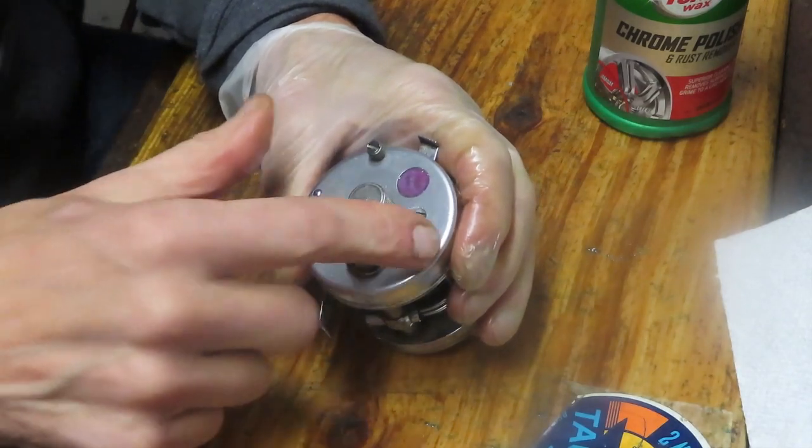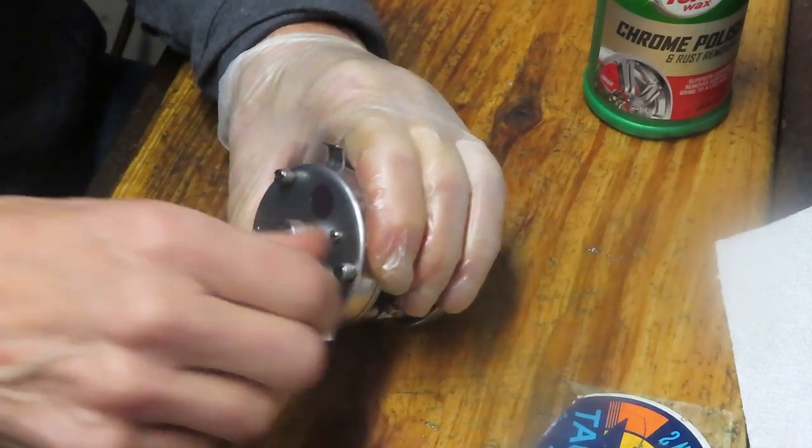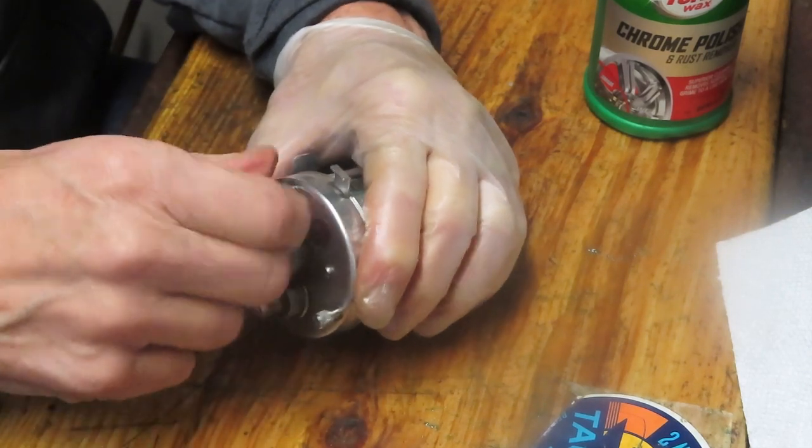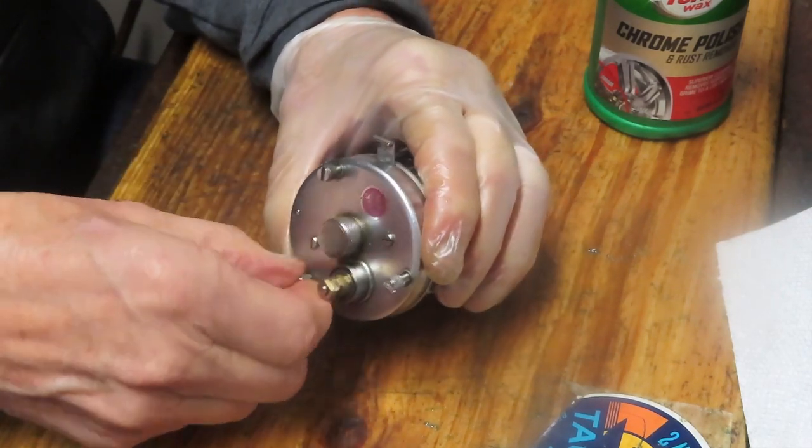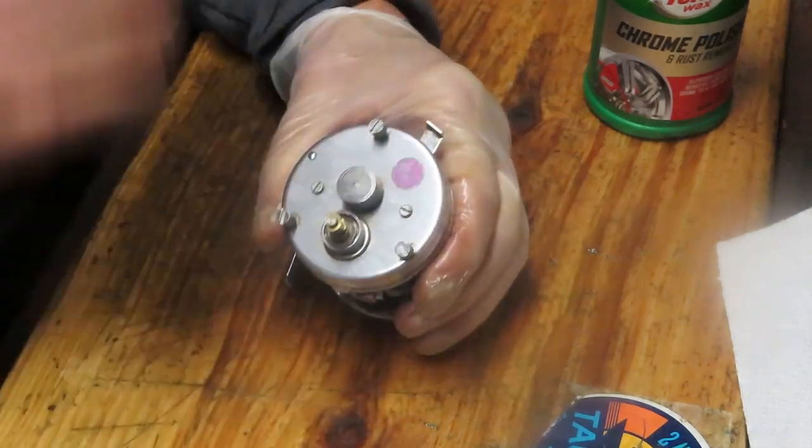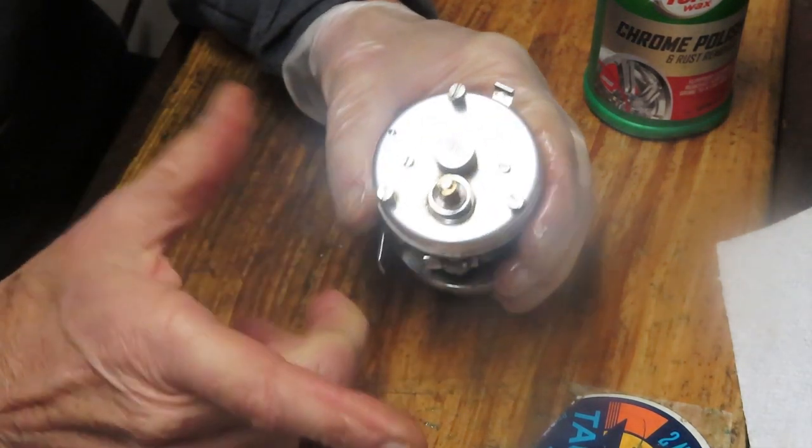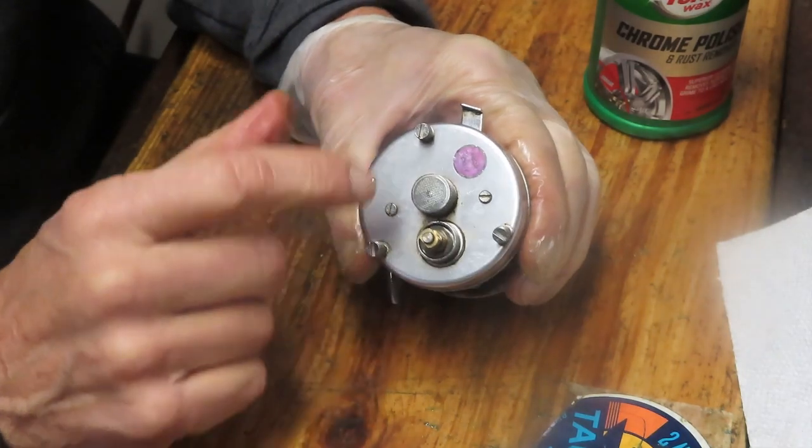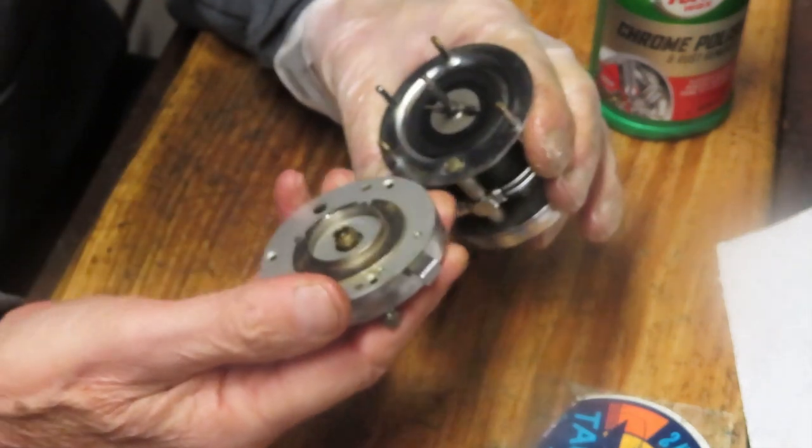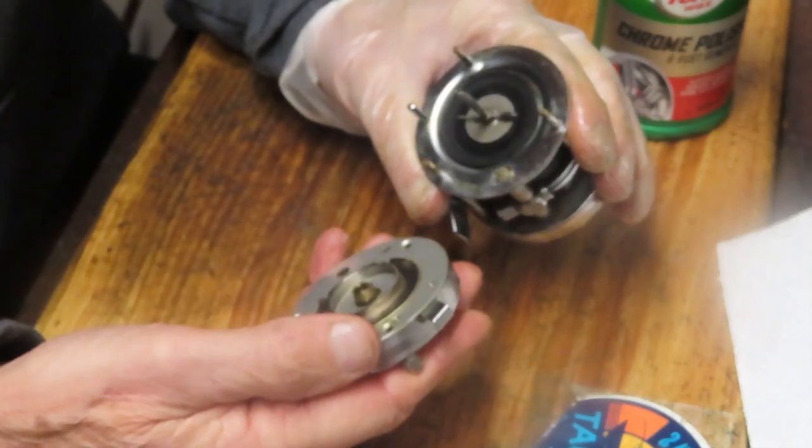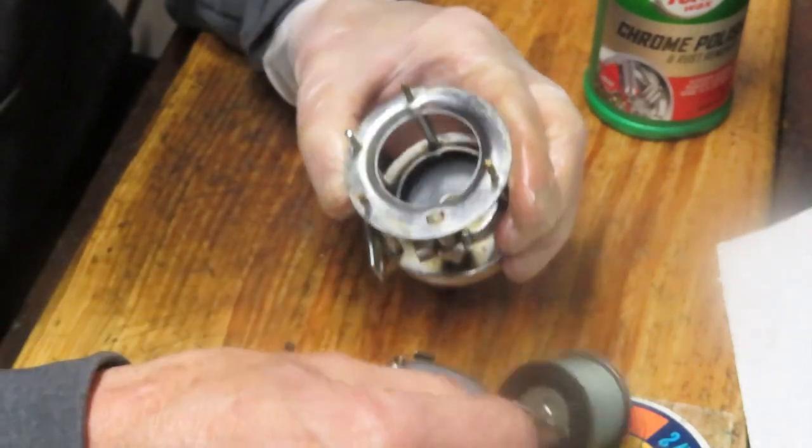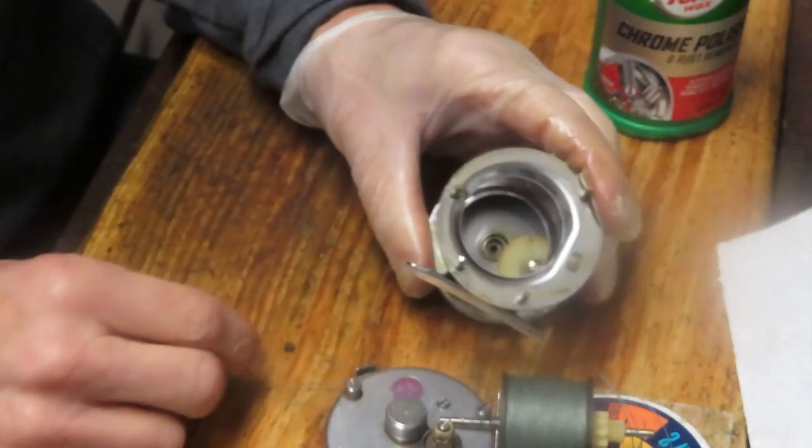There's three screws that hold the case on. Looks like maybe we even had an attempt to take this apart already because these screws are being loosened by hand. If you can loosen them by hand, generally that's not tight enough. With all that out, now we should be able to remove the side plate. Here's our first look.